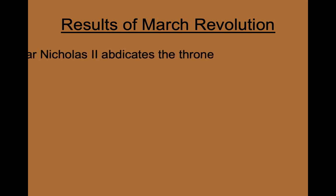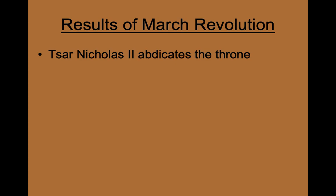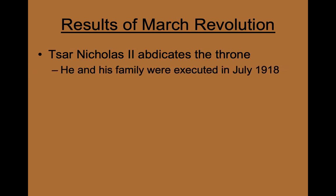Once the March Revolution was over, Nicholas abdicated the Russian throne and stepped down from power. And eventually, in July of 1917, both he and his wife, along with their children, were executed by members of the provisional government and the Bolsheviks.